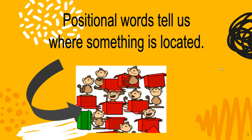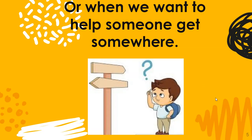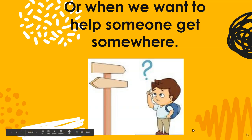Positional words tell us where something is located. If you look at the picture, the monkey is in different spots. When we talk about positional words, that's telling us where something is. We use positional words when we want to explain where something is located, or when we want to help someone get somewhere. Maybe you want to tell someone how to get to your house — you would use positional words like 'turn left here' or 'my house is behind the Kroger.' You would use positional words to help your friend find your house.